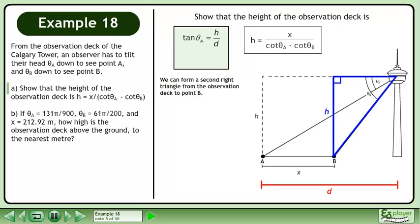We can form a second right triangle from the observation deck to point B. The horizontal distance from the tower to point B is d minus x. The equation tan theta B equals h over d minus x can be formed from the triangle.